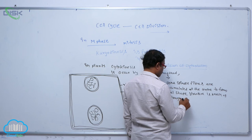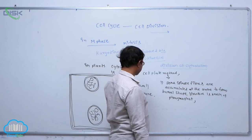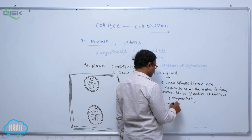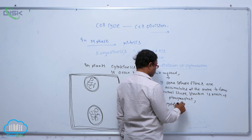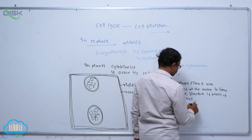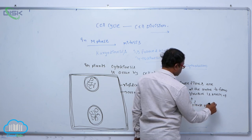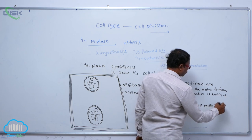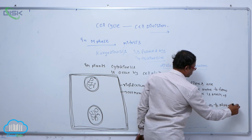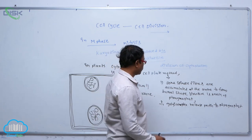Fragmoplast is formed. After that, the adjacent Golgi complex releases pectin substance into the phragmoplast. By the resulting process, the phragmoplast is chemically modified.